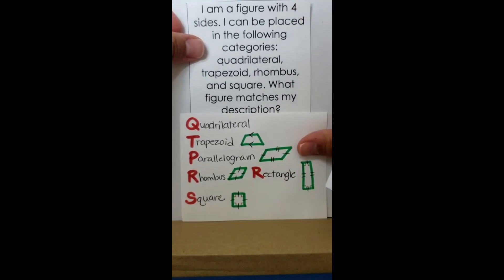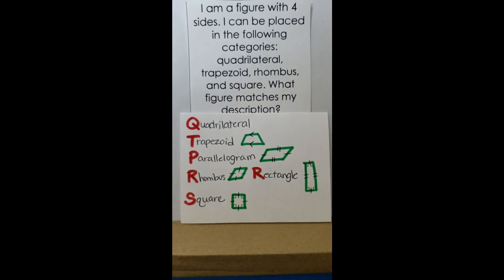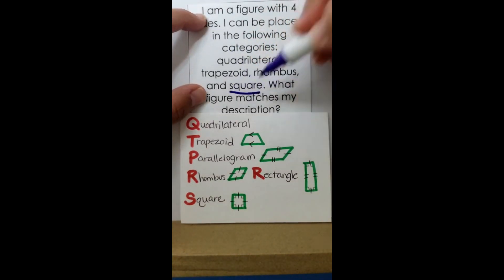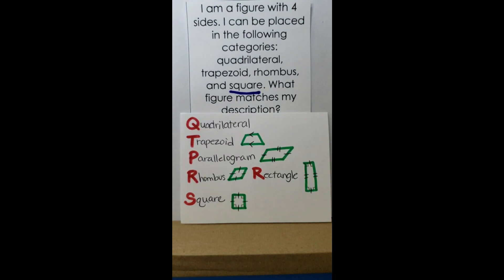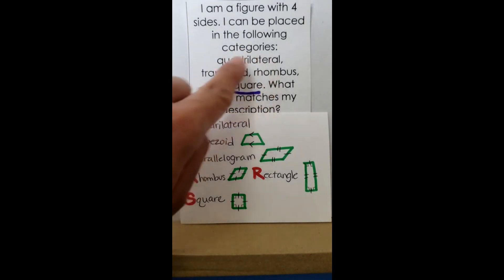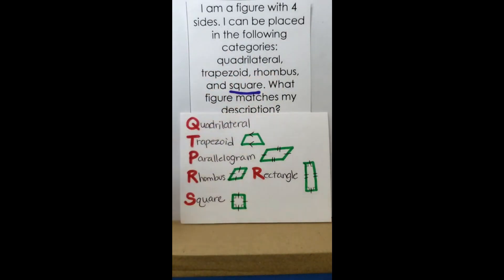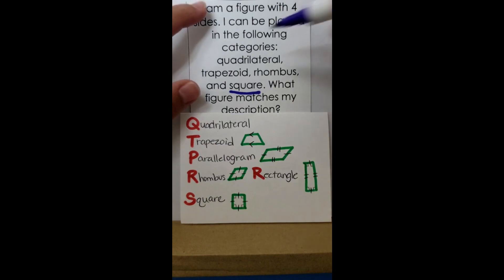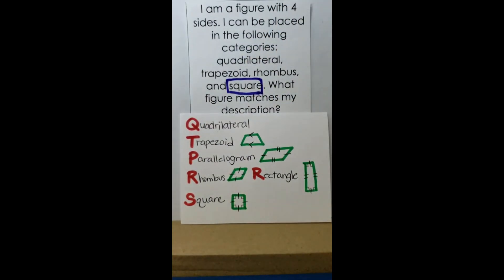Another riddle: I am a figure with four sides that can be classified as a quadrilateral, a trapezoid, a rhombus, and a square. The only figure that can be a square is a square itself, so if it fits all four of those categories, the shape has to be a square.